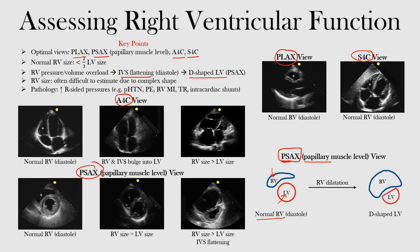If we have an increase in right ventricular pressure or volume overload, we get dilatation of that right ventricle. Normally the right ventricle should be less than two thirds of the left ventricle, but if it dilates, the right ventricle gets enlarged. Notice how much larger the RV now is compared to the left ventricle. In diastole, we get this intraventricular septum flattening and the left ventricle gets this D-shape — almost like a sideways D — because the right ventricle is overloaded and pushing on it.